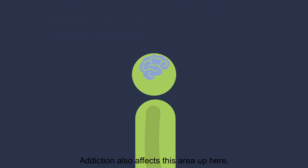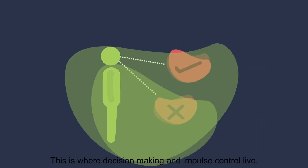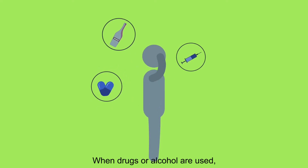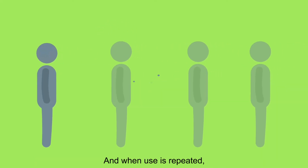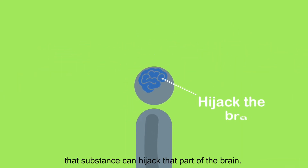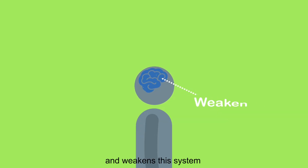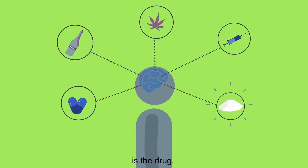Addiction also affects the prefrontal cortex, which is what separates us from other animals. This is where decision-making and impulse control live. When drugs or alcohol are used, they activate the same dopamine process in the survival center. And when use is repeated, that substance can hijack that part of the brain. This hijacker changes the brain and weakens this system to make it believe that the primary need for survival is the drug.